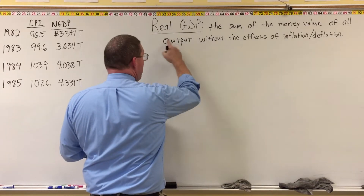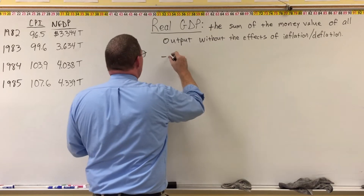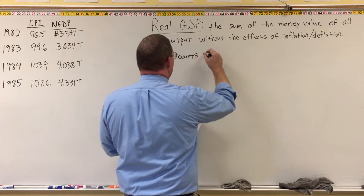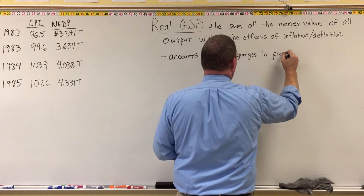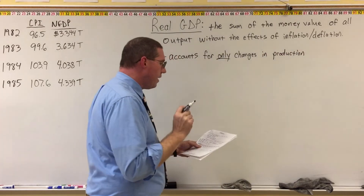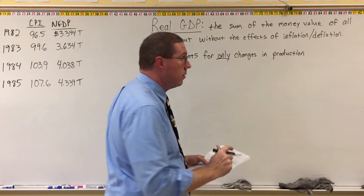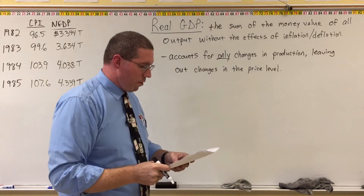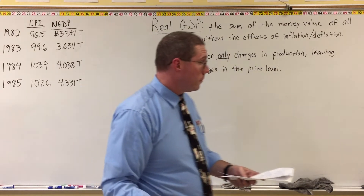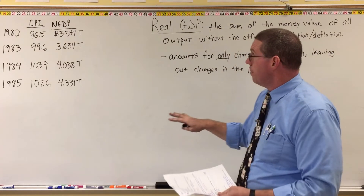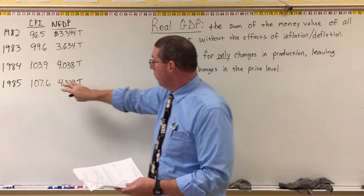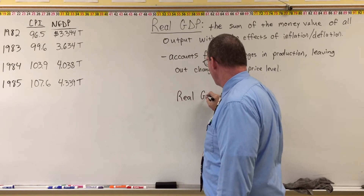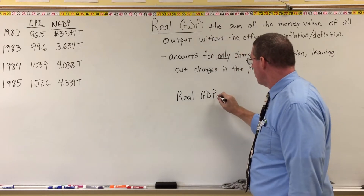What real GDP does, when we calculate this, is it accounts for only changes in production, leaving out changes in the price level. I'm going to give you the formula now, and then we are going to calculate real GDP for all of these years. To calculate real GDP, we're going to say real GDP in year N.